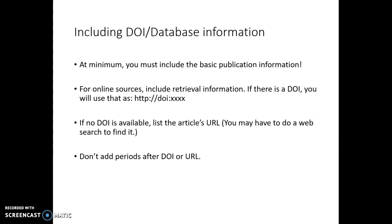Include DOI and database information — so much information is electronic now, and a lot of articles have a DOI. You have to include the basic publication information and include a DOI. If there's not a DOI, APA says to include the page where the article is listed, and you might have to search to find that.